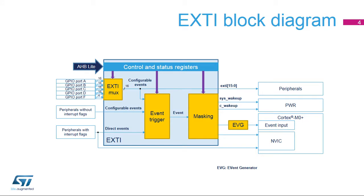This is the block diagram of the Extended Interrupt and Event Controller. Configurable Events are generated by peripherals without interrupt capability, but which are able to issue a pulse. The EXTI controller provides interrupt detection, masking, and software trigger. Direct Events are generated by peripherals supporting interrupt requests. In this case, the EXTI controller is used to generate events to the CPU and to request system wake-ups.